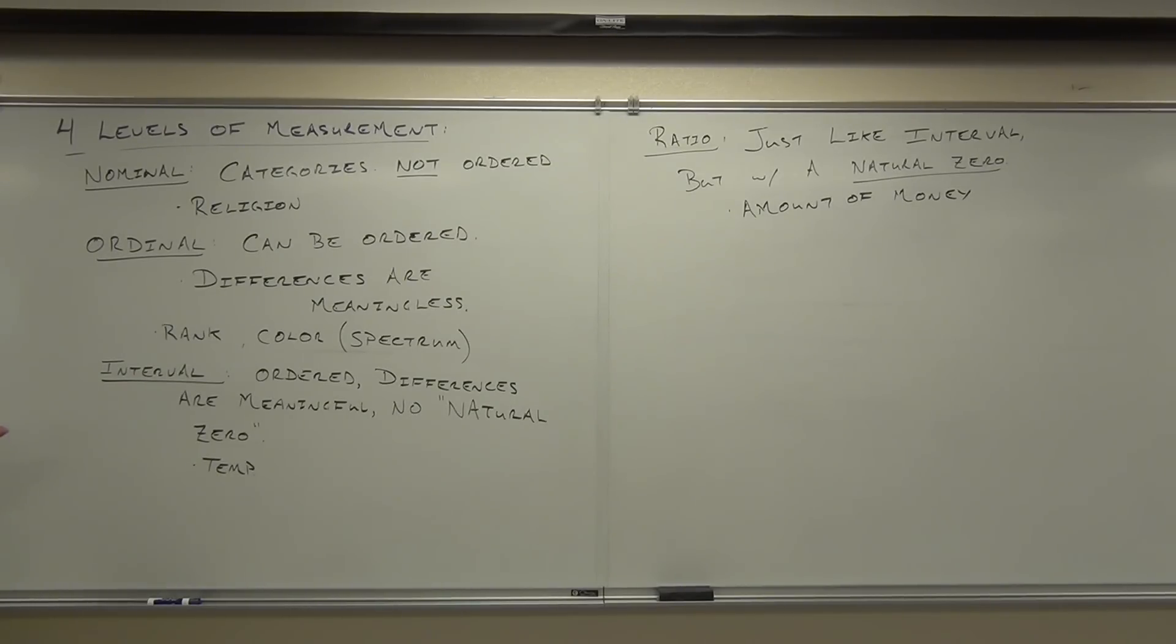So you get this nominal stuff, categories only, you can't put it in order. Ordinal could have categories or numbers. You can put them in order, but the differences are meaningless. You can't subtract them and have it mean how much better one was than the other. That doesn't make a lot of sense.